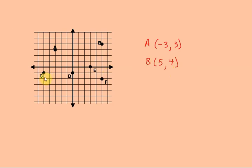For point C, starting at the origin I go to the left 1, 2, 3, 4, 5 spaces — that would be a negative 5. Then I go down one space, which would be a negative 1. We always do left and right first, then up and down last.